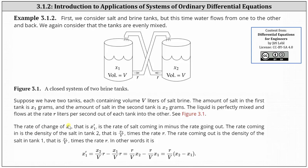The rate of change of x1, the amount of salt in tank one, that is x1 prime, is the rate of salt coming in minus the rate going out. The rate coming in is the density of the salt in tank two, which is x2 divided by V times the rate r.